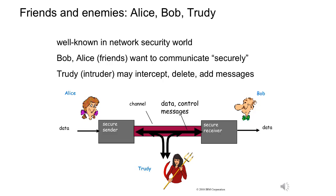Bob and Alice want to communicate securely. It can be for any reason, a personal reason or a business reason. Trudy, who is the interceptor, desires to intercept, delete, add messages, change messages — effectively a bad actor. So we take a look at the diagram here on slide seven, and we see Alice on the right-hand side. Alice has some data — this could be an email, a note, a web page. She secures this message, moving from clear text to cipher text, and transmits it across a channel.